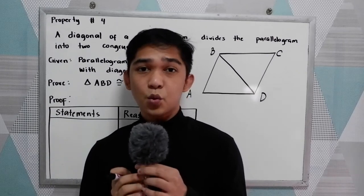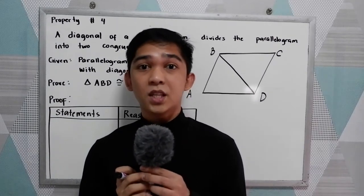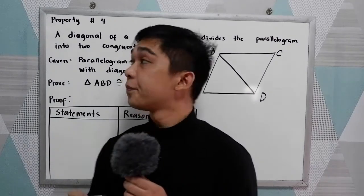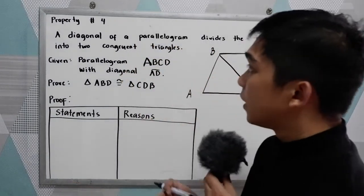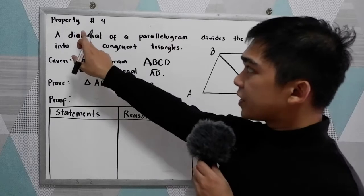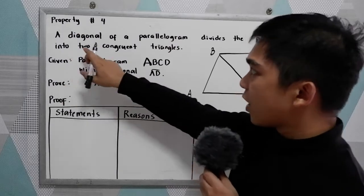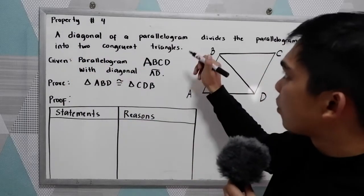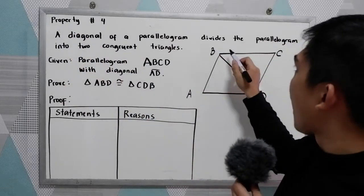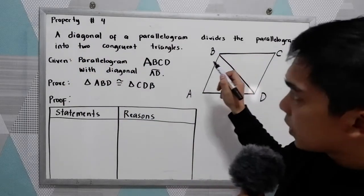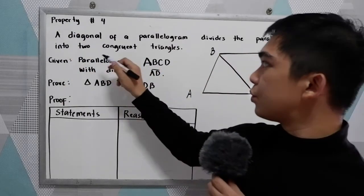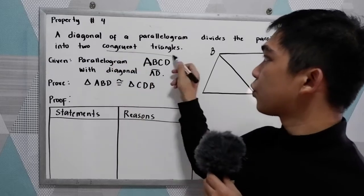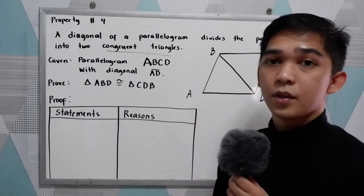Now, let us proceed to property number four. Property number four: a diagonal of a parallelogram divides the parallelogram into two congruent triangles.